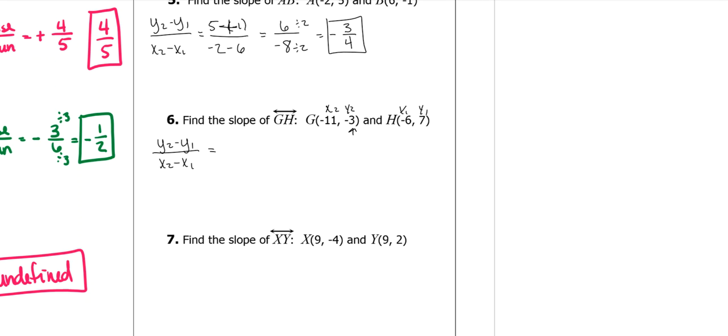All right. y2 is negative 3 minus y1, which is 7. x2 is negative 11 minus x1, which is negative 6.